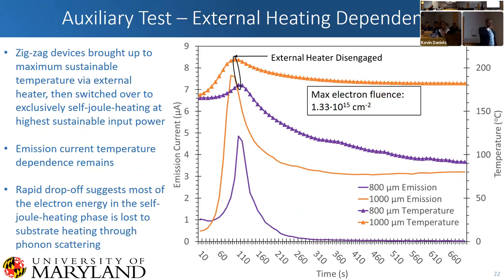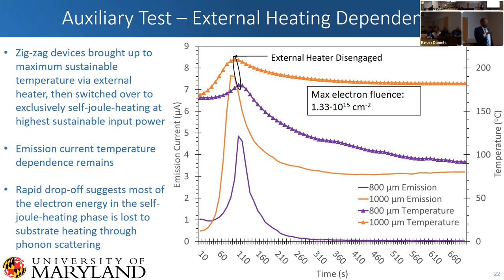This was a really interesting experiment: we externally heated it, let it reach a set temperature, disengaged the heater while the device was on, and we have our emission. Our 1,000-micron device showed really, really good emission, and then as soon as we disengaged the heater, a huge drop occurred — confirming energy is being transferred to keep the device hot. We're getting max electron fluence of about 1×10¹⁵, which is enough for a meaningful x-ray source.